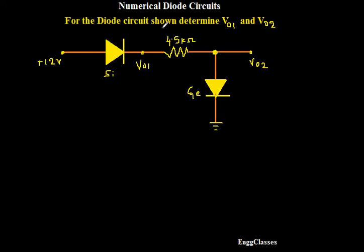The task is for the diode circuit shown, determine V01 and V02. This is plus 12V, the supply voltage. After that I have the silicon diode and then here I have V01. After that I have a resistor in series that is 4.5 kilo ohm and I have one more germanium diode over here and towards the end I have V02.